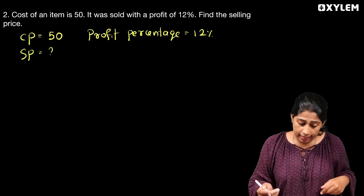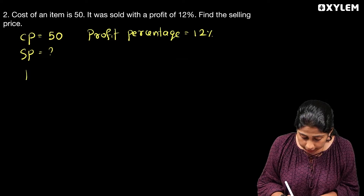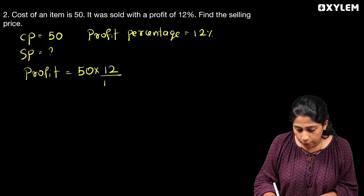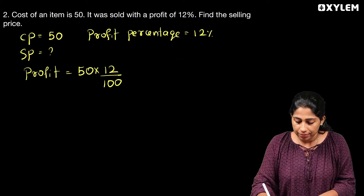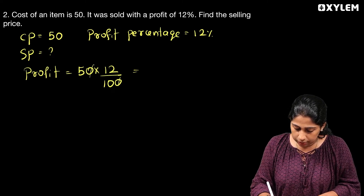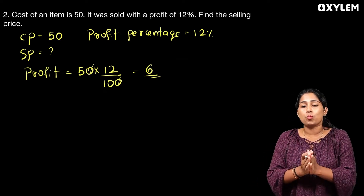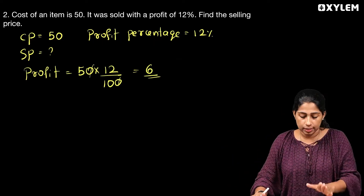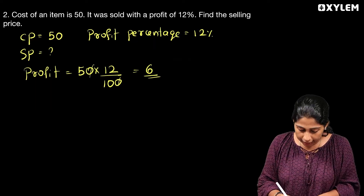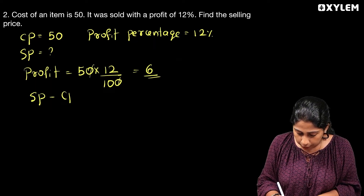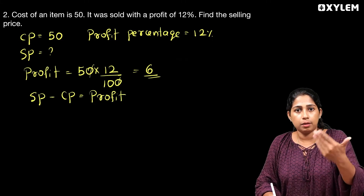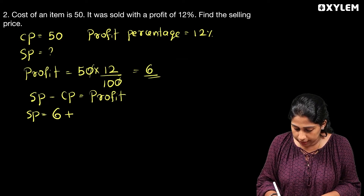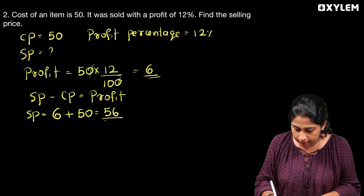Profit equals 12% of 50 rupees, which gives 6 rupees. Selling price equals cost price plus profit, so selling price equals 50 plus 6, which equals 56 rupees.